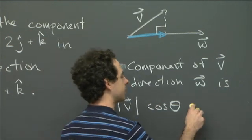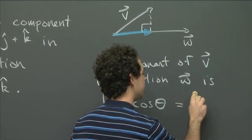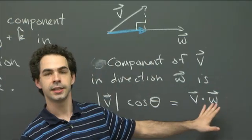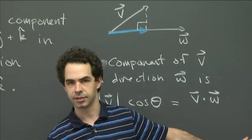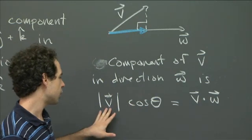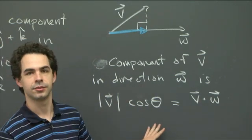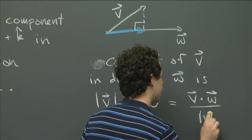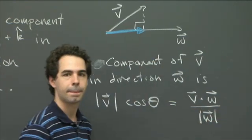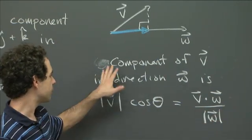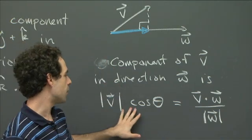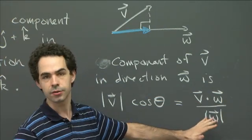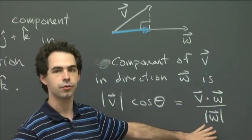So another way of writing this is to say that this is equal to v dot w. So v dot w is the length of v times the length of w times the cosine of the angle. And so here we just have the length of v times the cosine of the angle. So we have to divide this through by the length of w. So this is what the component is. And this is the simple formula for it if you're given v and w in some easy to use form.